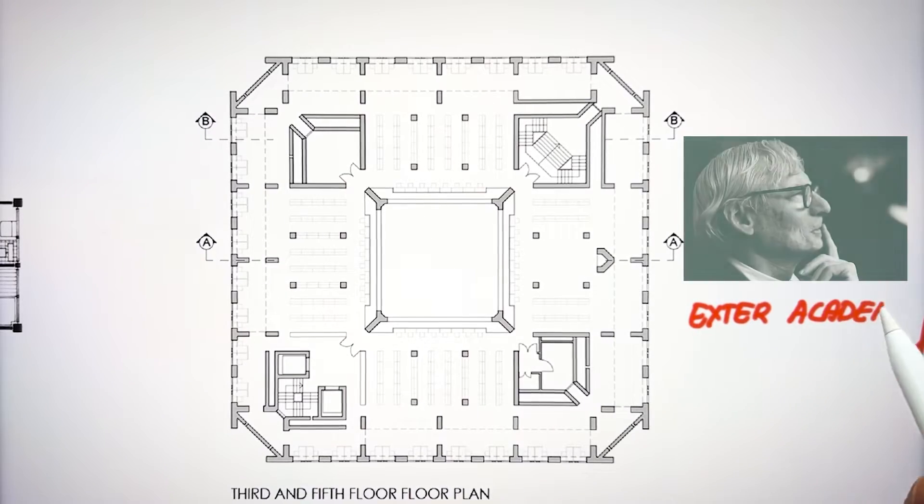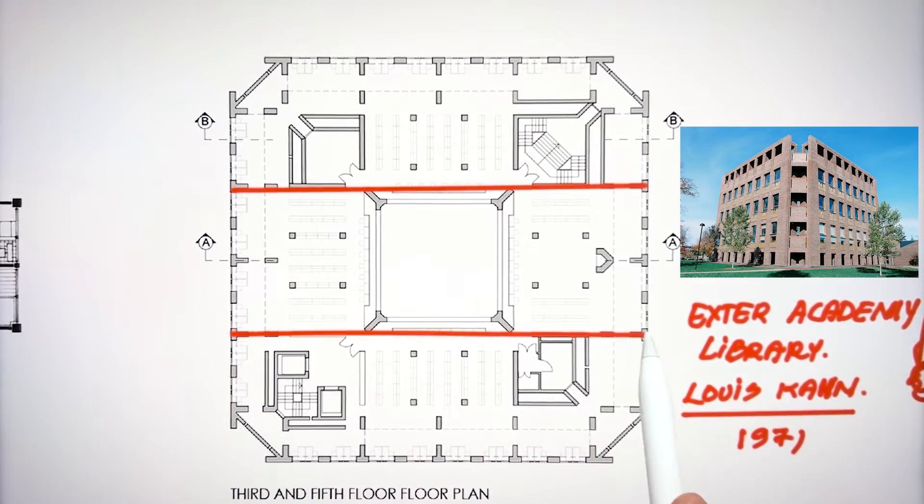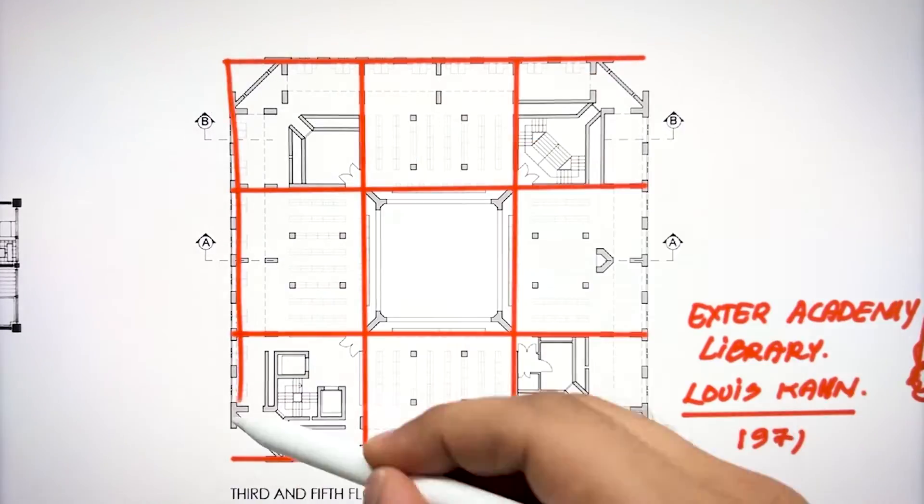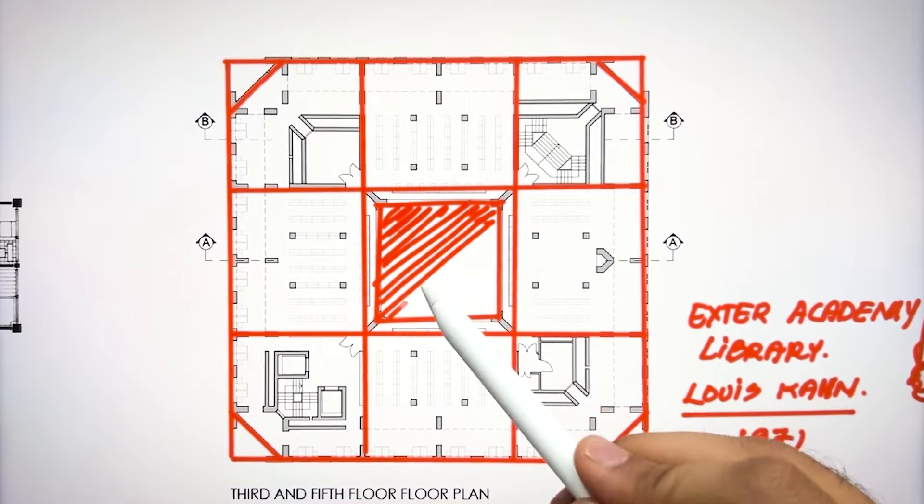Then another extension of nine grid system is designed by Louis Kahn. It was the library in 1971 which also followed the system of nine grid. Here Kahn used the hierarchical center of the nine grid and chamfered the corners of the building.